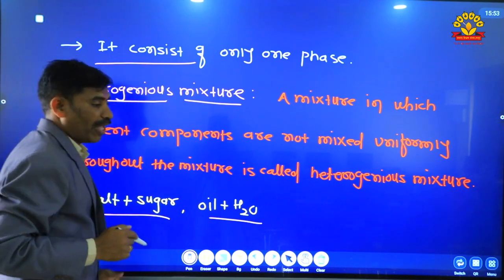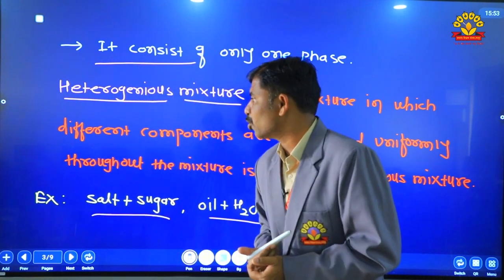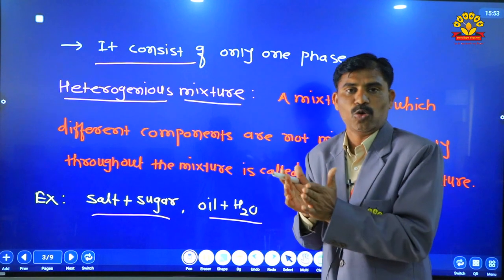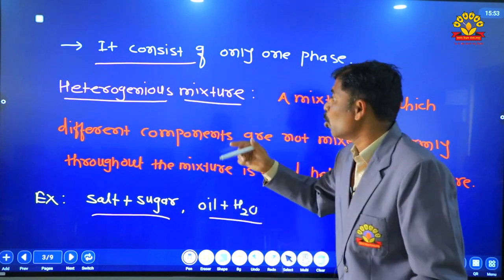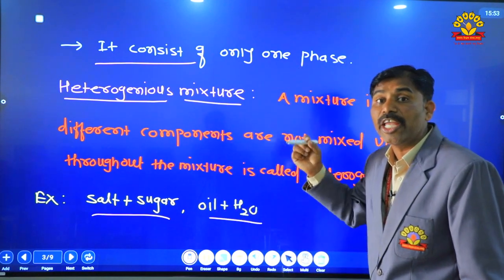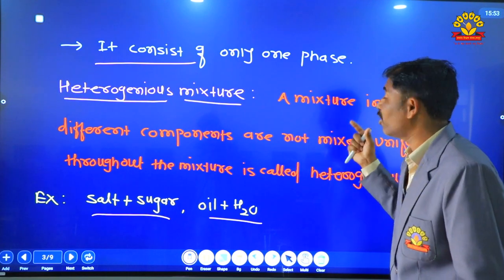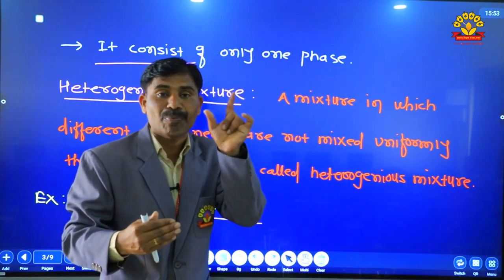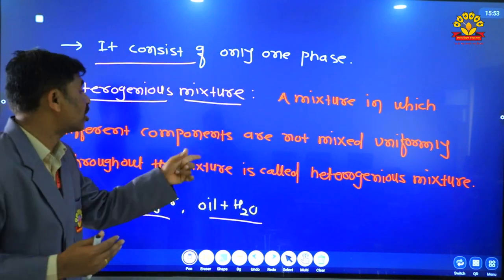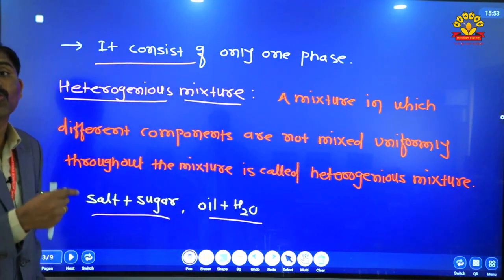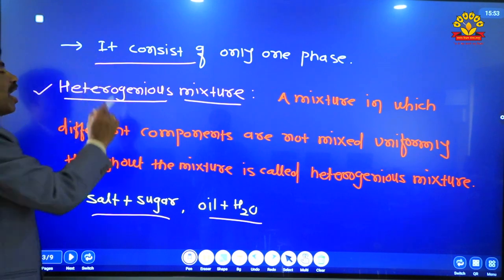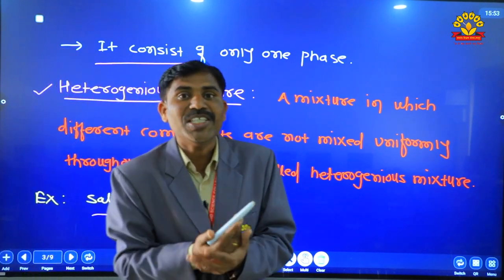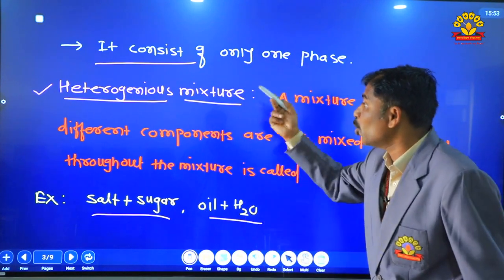Now second one — heterogeneous mixture. Hetero ka matlab hai 'different'. A mixture in which different components are not mixed uniformly throughout the mixture is known as heterogeneous mixture. Yaani ki ye different components hote hain.